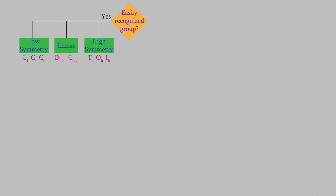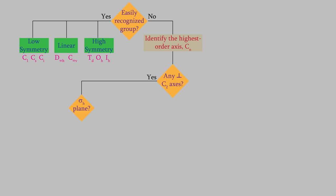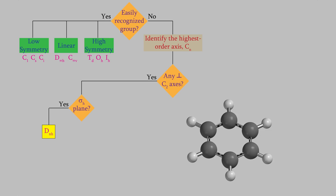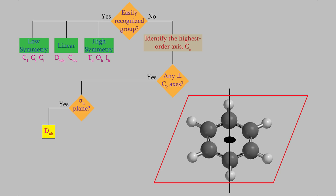Now for the other groups. To identify them, we first identify the major axis of the molecule, then ask: are there any C2 axes perpendicular to the major axis? If there are, the molecule belongs to one of the D point groups. The next question is whether the molecule has a horizontal mirror plane. If it does, it belongs to the DNh point group, where N is the order of the major axis. For example, benzene has a C6 major axis, a horizontal mirror plane, and C2 axes perpendicular to the major axis — so benzene belongs to the D6h point group.